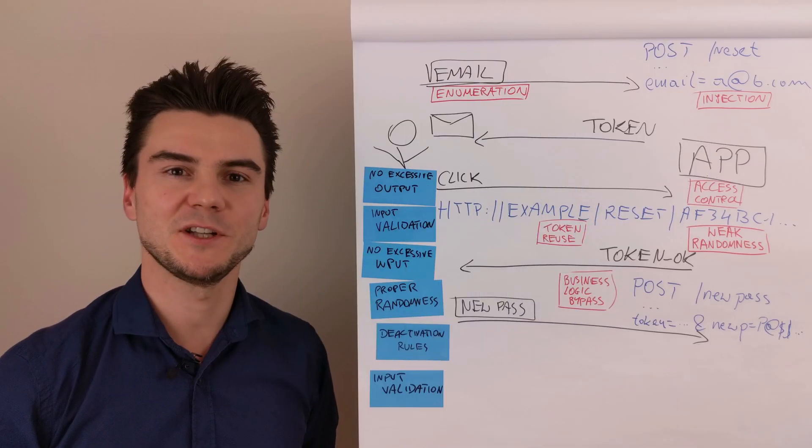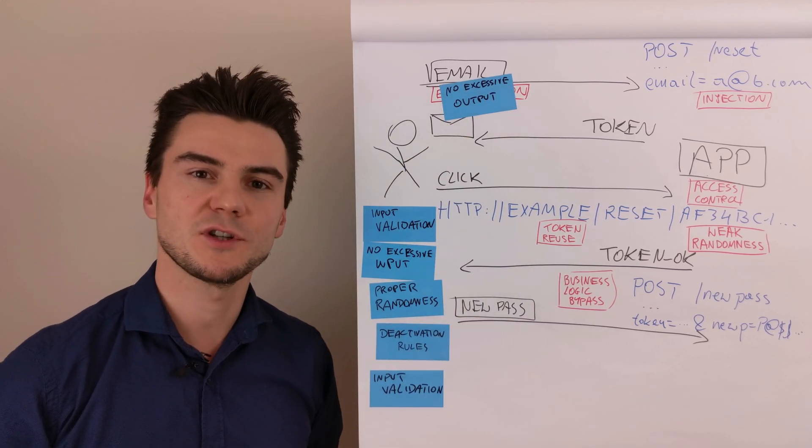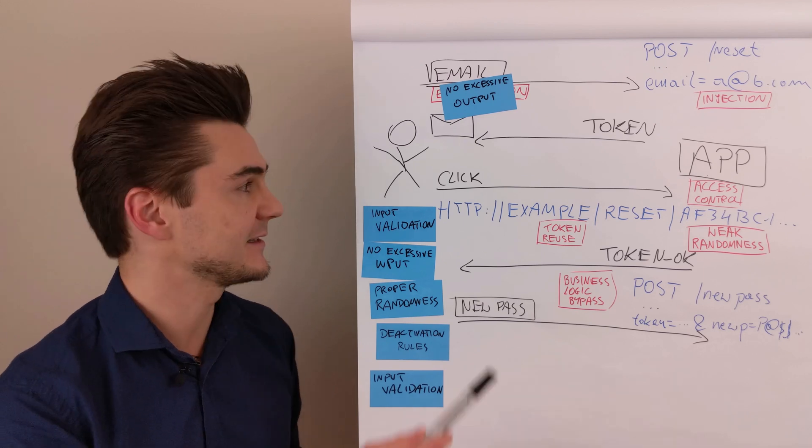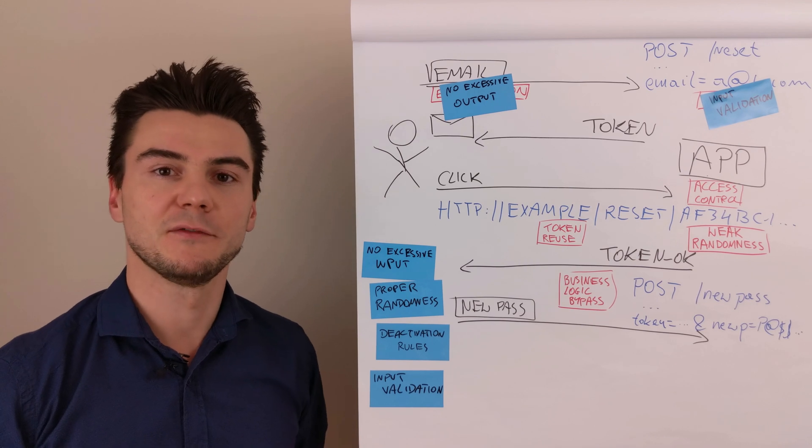And time for instant mitigations. No excessive output will solve the enumeration problems. We should also not change the account status before the user clicks the email. And then input validation for any kind of injection in the email field.